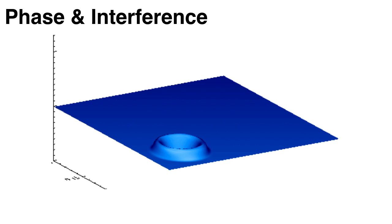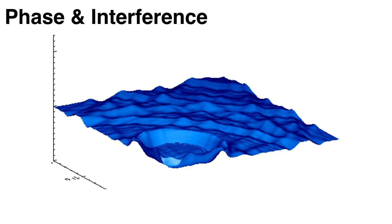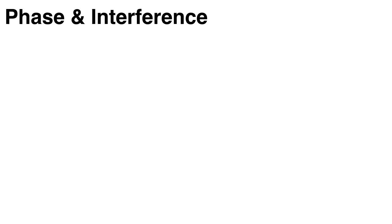Just like if you drop two rocks in a bucket of water — when the waves caused by the first rock hit the waves caused by the second rock, they will partially cancel each other out, and you will have a jumble of smaller waves.